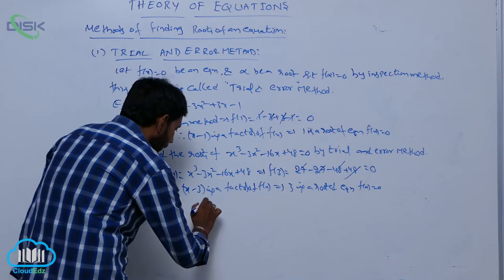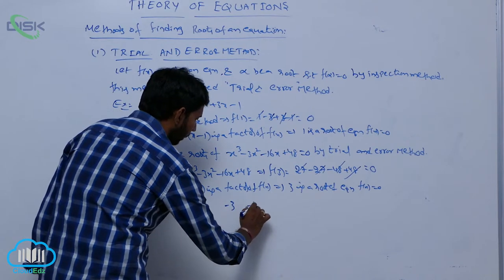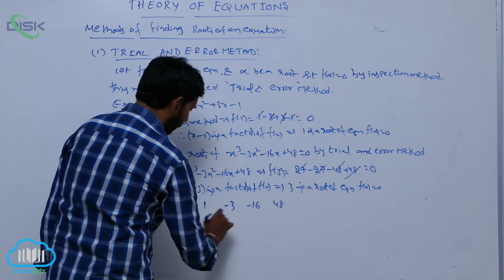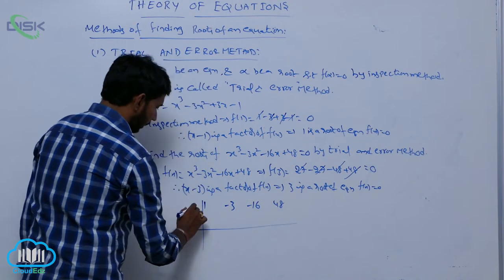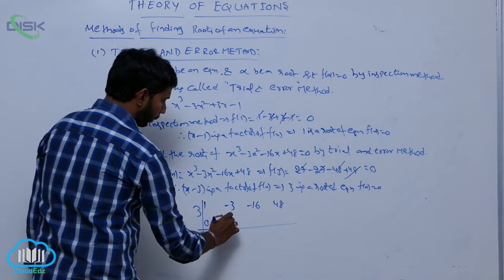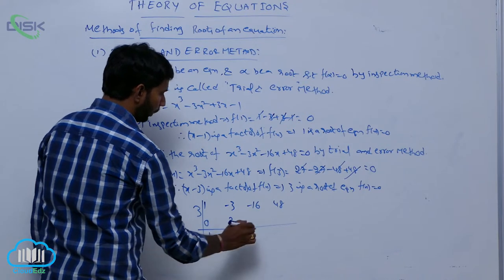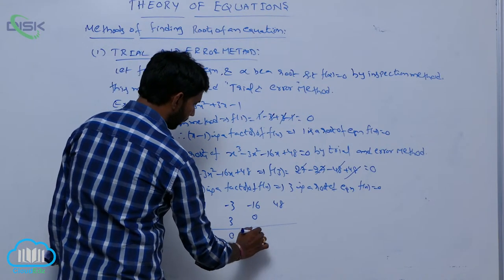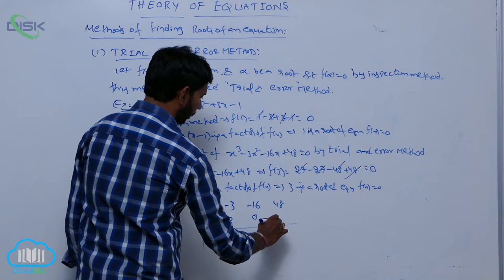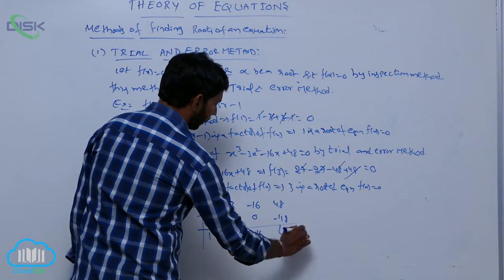Write the coefficients of equation: 1, -3, -16, 48, with divisor 3. 1 + 0 = 1; 1×3 = 3, giving 0; 0×3 = 0, giving -16; -16×3 = -48, giving remainder 0.